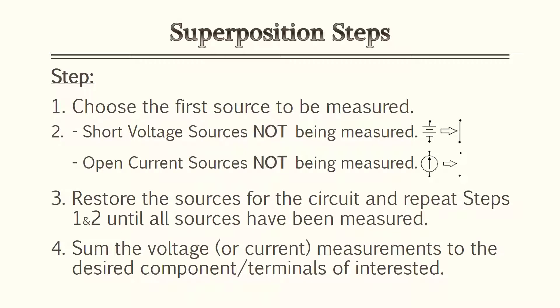Superposition consists of four simple steps. Step one: choose the first source to be measured — we do one source at a time. Step two: short the voltage sources not being measured and open the current sources not being measured. Step three: store the results for that circuit and repeat steps one and two until all sources have been measured. Step four: sum the voltage or current values to the desired component terminals of interest.